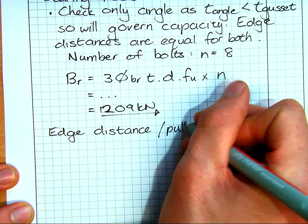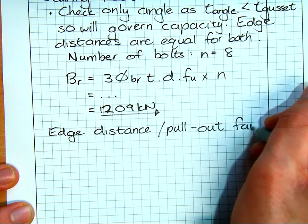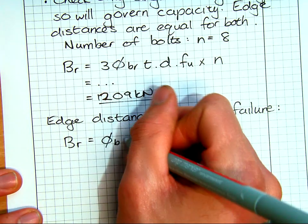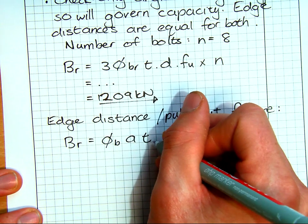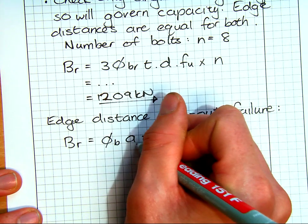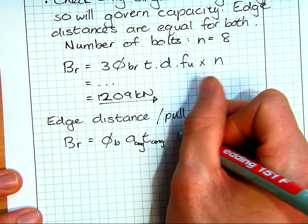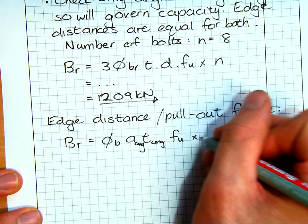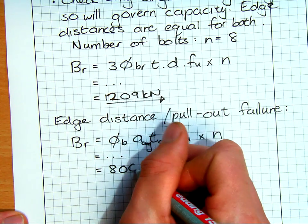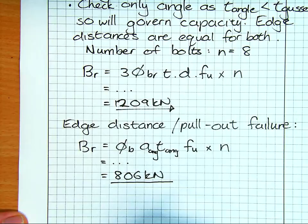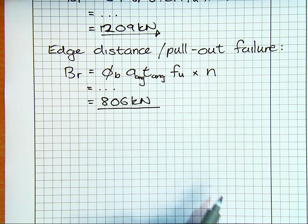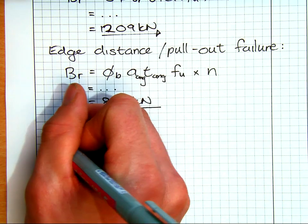Then edge distance, otherwise you called it pull out failure. And what we have there is our bearing resistance is phi_b a t, and then this is both of the angle that we're dealing with, I'm just going to call it a_angle and t_angle just to make sure you realize it's not the gusset plate we're checking, times by n. We insert all of those and we have 806 kilonewtons. So we actually can start seeing that this is probably going to govern the bearing resistance due to edge failure pull out.